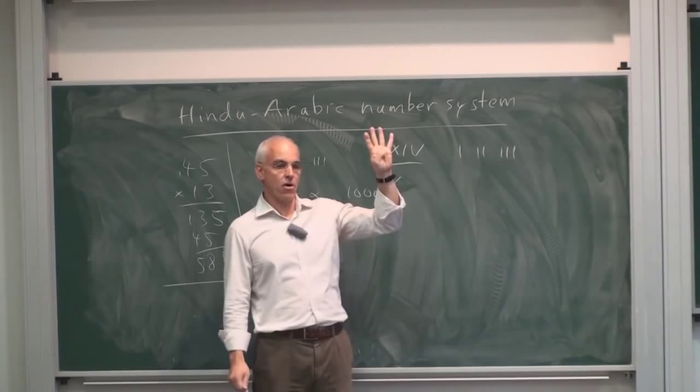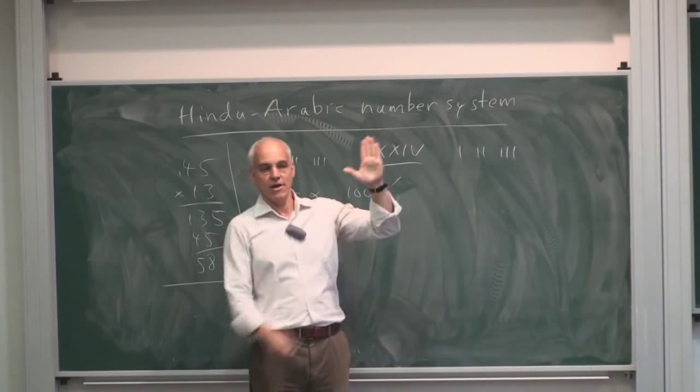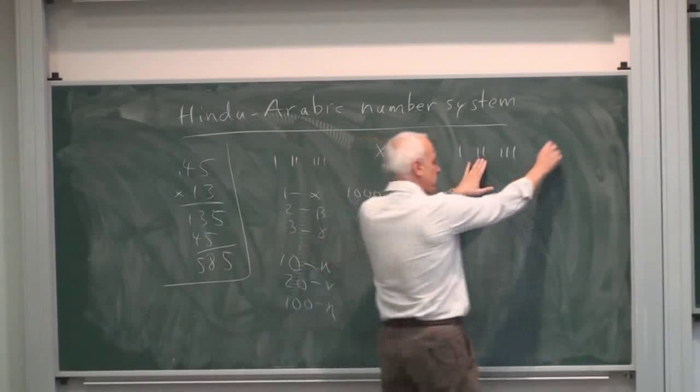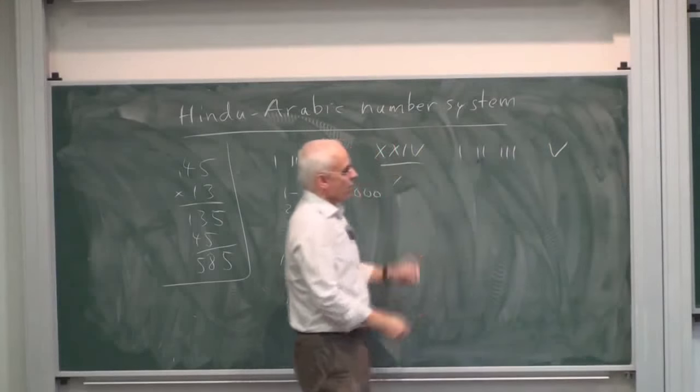The Romans used this hand signal. One, two, three, four, that was four, that was five. And from the V that the thumb forms, that's where the five comes from.